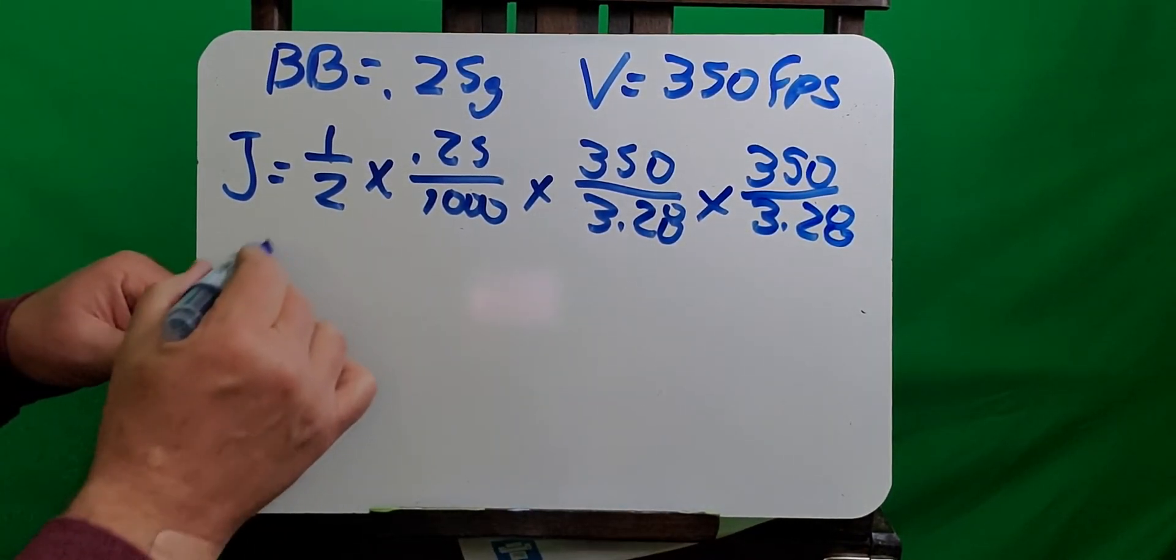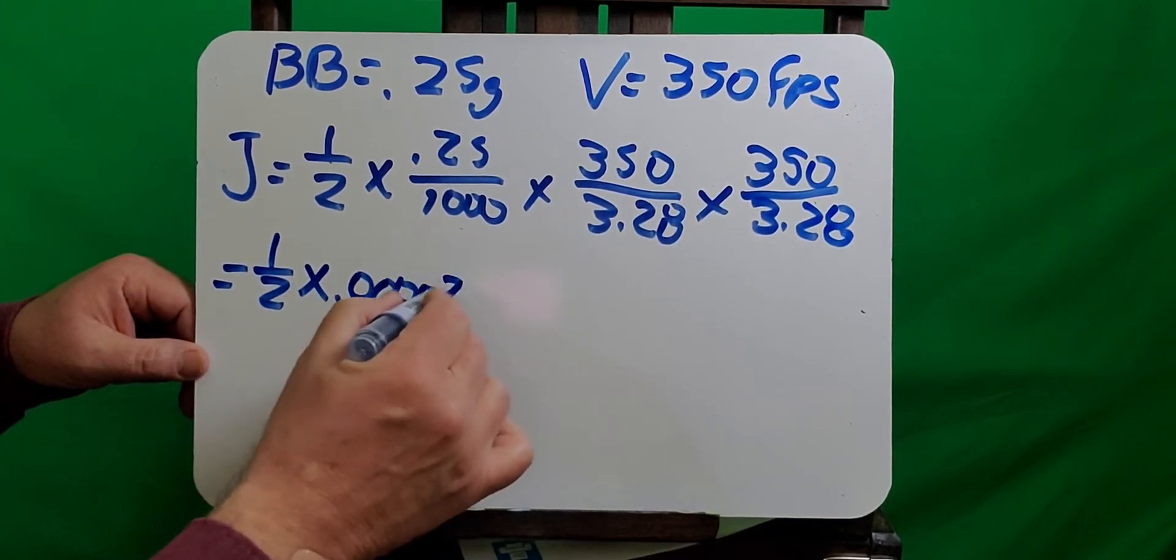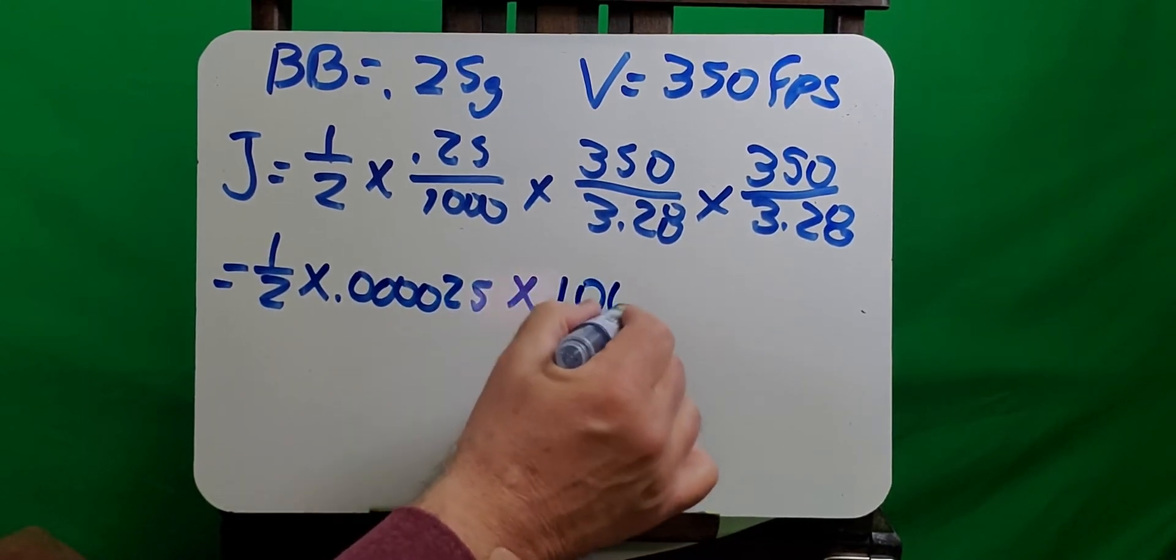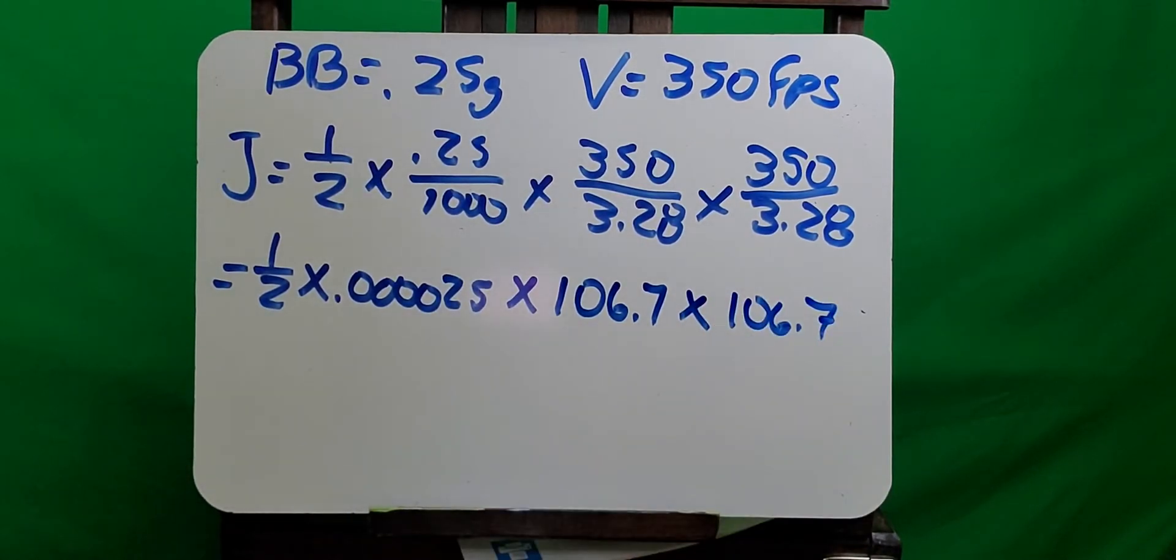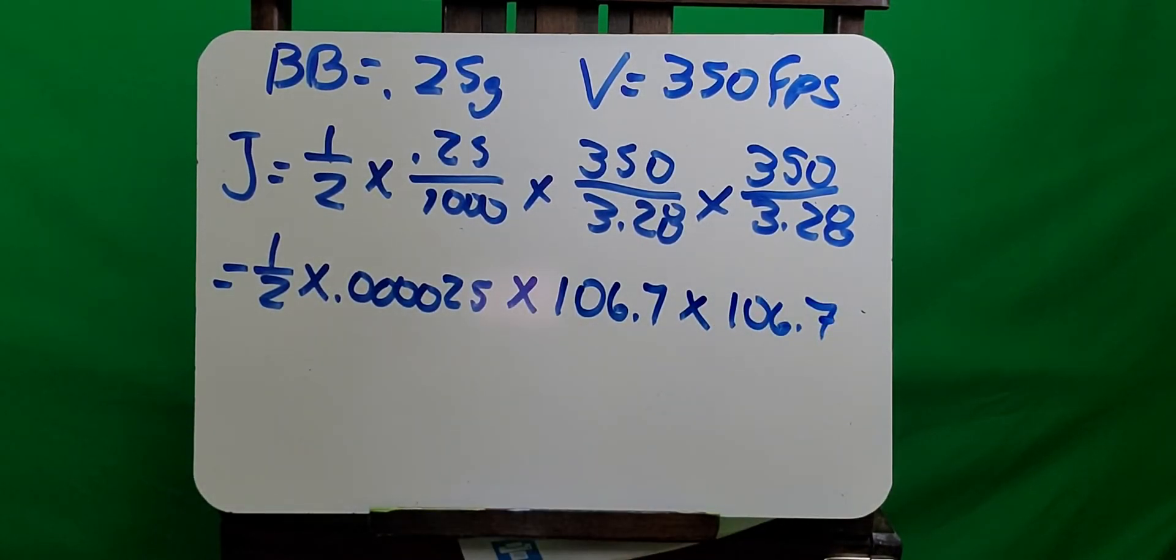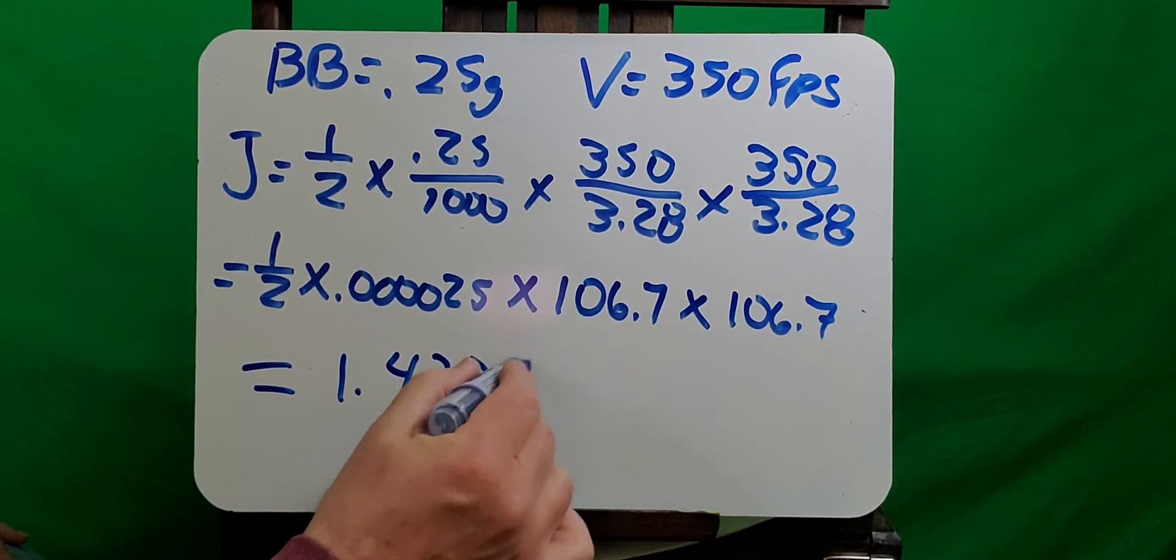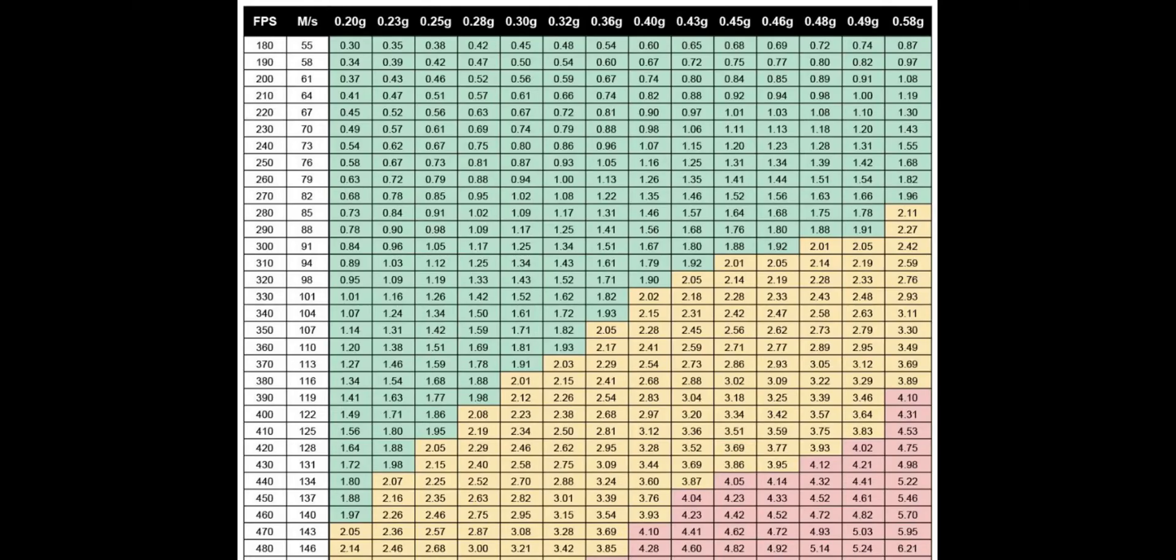And that turns into one-half times 0.000025 times 106.7 times 106.7. And it turns out that 106.7 meters per second is equal to 350 feet per second. After doing all the math, the answer that I got is 1.42311125 joules. And if we look at the Airsoft joules chart, we'll see that a BB traveling 350 feet per second at 0.25 grams is equal to 1.42 joules.